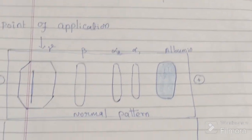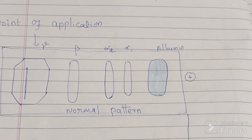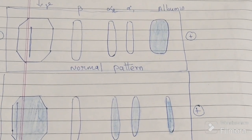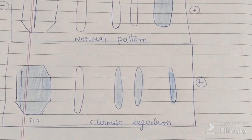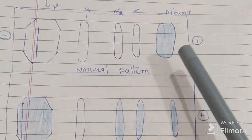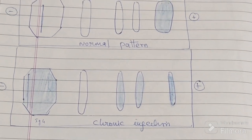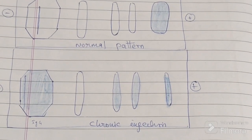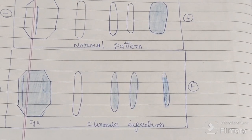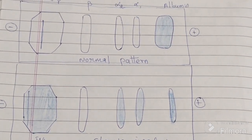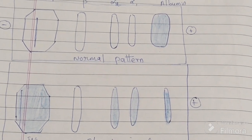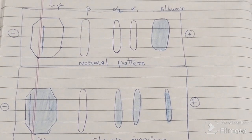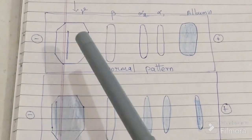This is the normal pattern of electrophoresis. Some differences are seen in the patient with chronic inflammation. This is the normal pattern, and this is the chronic infection pattern. Some differences are seen between normal and chronic infection.